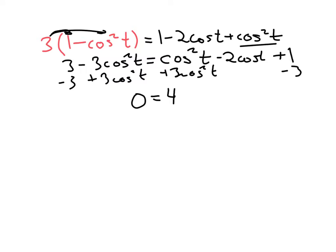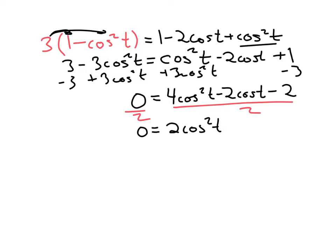And then subtract 3 from both sides and add 3cos²t to both sides. So that's, now we have 4cos²t - 2cos(t), and then 1 - 3, so that's -2. Now notice that everything here is divisible by 2. So divide each term by 2. So this is 2cos²t - cos(t) - 1.